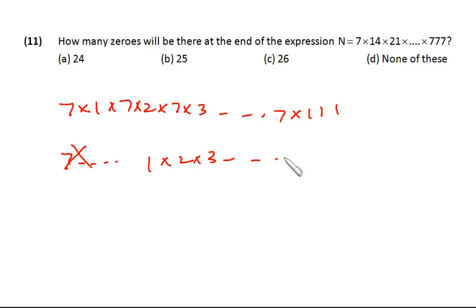So it's actually 111 factorial. Now we have already discussed in the previous question, we get zeros by 5 and 2 combinations. So as many 5 and 2 combinations are there, those many zeros will be produced. So let's begin to calculate the number of 5s in 111.